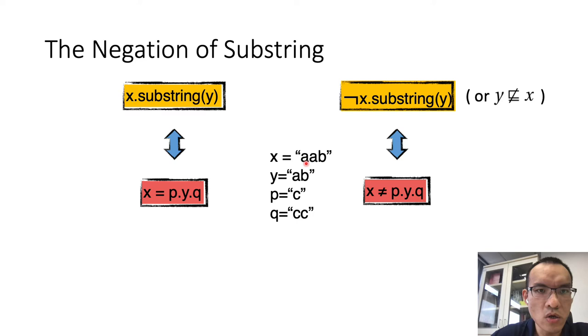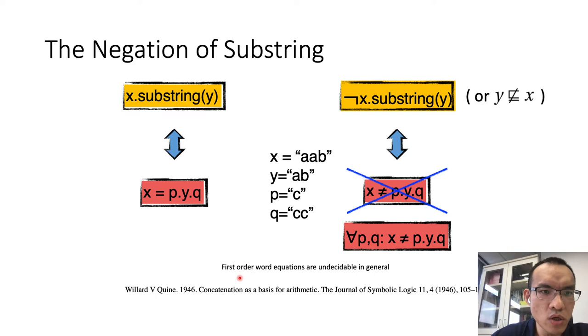To correctly model this not-substring relation, we need to use quantifiers. We need to say for all possible prefix and suffix, S is not equivalent to the concatenation of P and Y and Q. This is a very difficult problem. In general, first-order word equations are not decidable, and this is a well-known result.